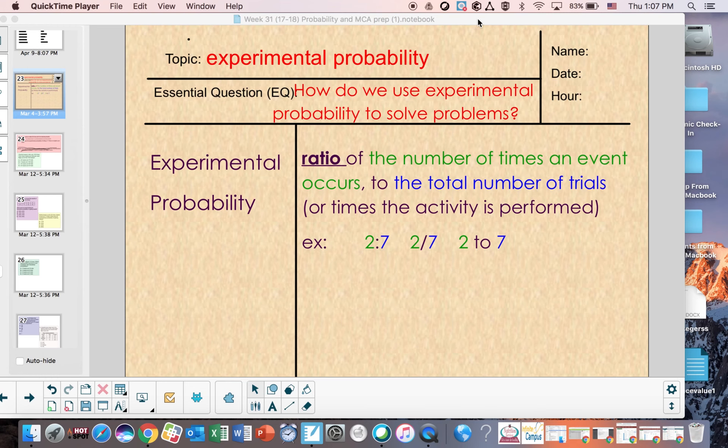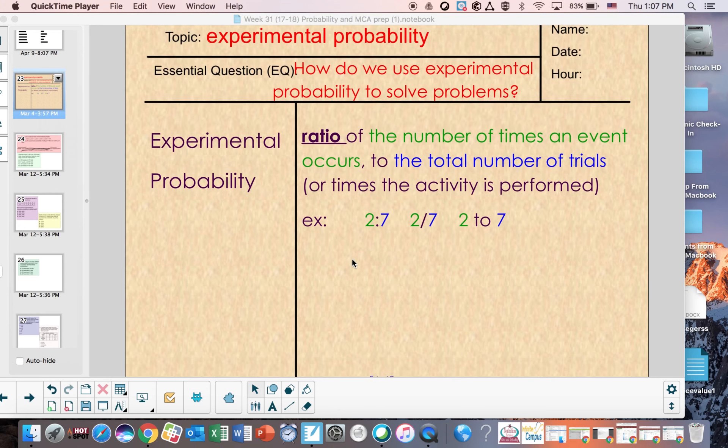You're going to want to get these notes down like normal. You see here, it's outlined in green, the ratio, or we can express it like a fraction. We can express it as a decimal and percent also, like mentioned before. It's the ratio of the number of times an event occurs, or whatever we're looking for, to the total, the bottom number, the total number of trials. This is based on an experiment that we perform.